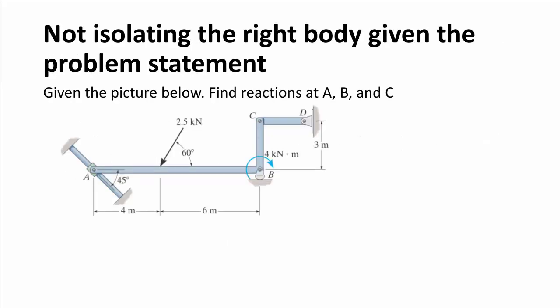Second, one of the common errors I see is not isolating the correct body given in the problem statement. In this one here, we have a problem statement that says find the reactions at A, B, and C, noting it doesn't say anything about D. So this is the body that would enable us to find the reactions at A, B, and C. It doesn't include point D. We're just going to include the forces coming from these three supports.